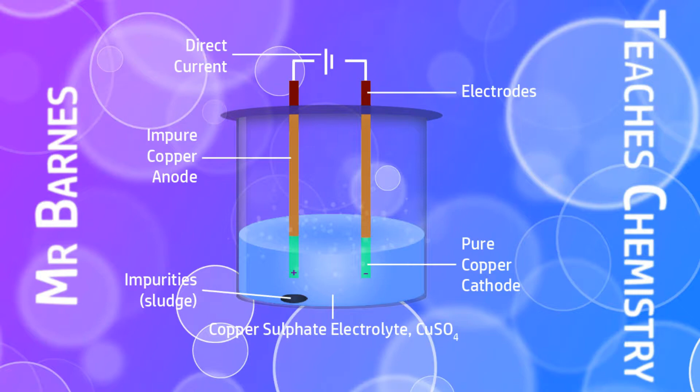The reason we need to do that is copper is used in electrical wiring, for example, and it needs to be really good at conducting electricity. If it's impure it won't be able to do that as well. So what we need to do is purify and remove any impurities, and we do that with electrolysis.